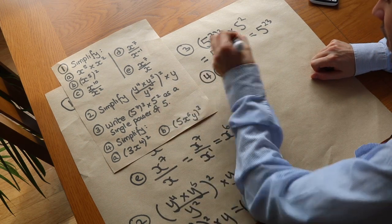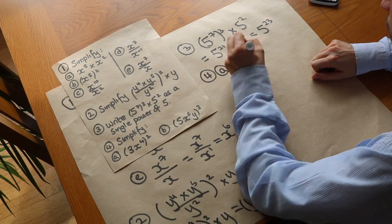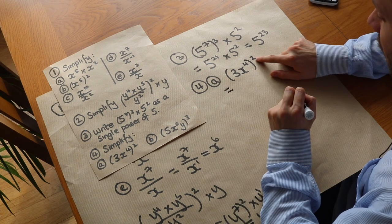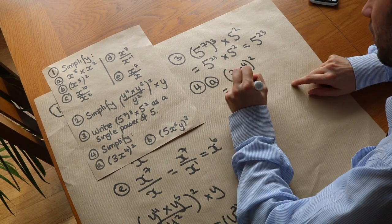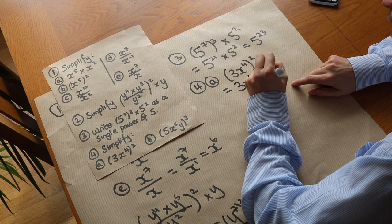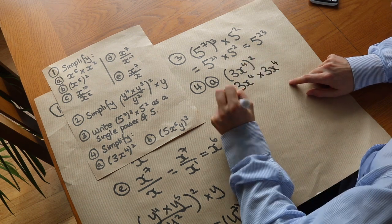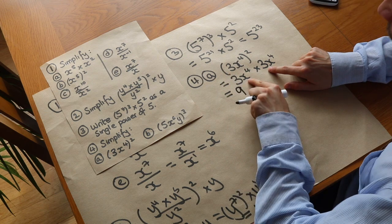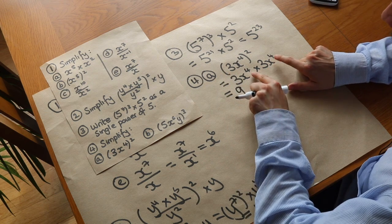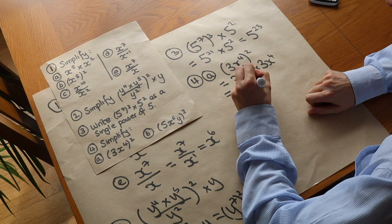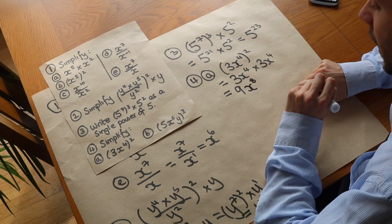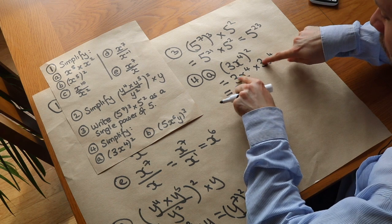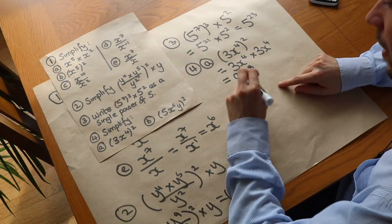Finally, we've got three x to the four, all squared. Squaring means multiplying by itself, so it's three x to the four times three x to the four. Everything is being multiplied together: three times three is nine, and x to the four times x to the four — adding the powers — gives x to the power of eight. Note that you multiply the threes but add the fours, so just be careful about that.